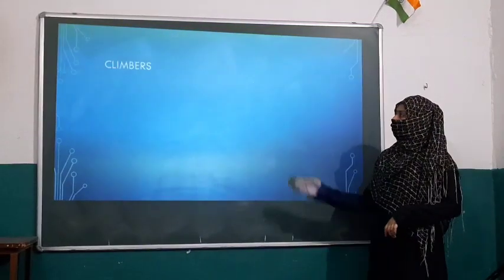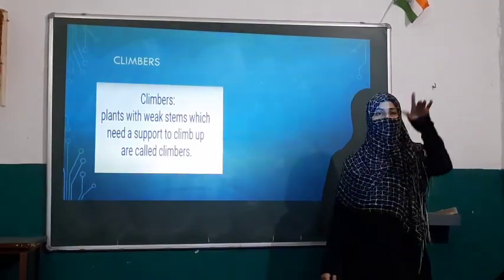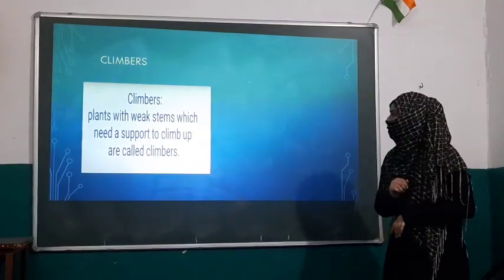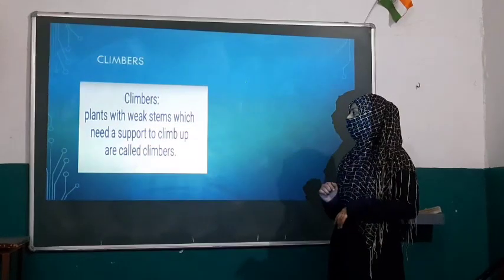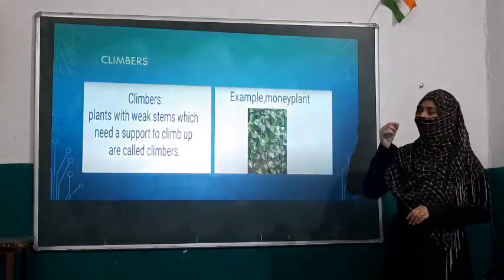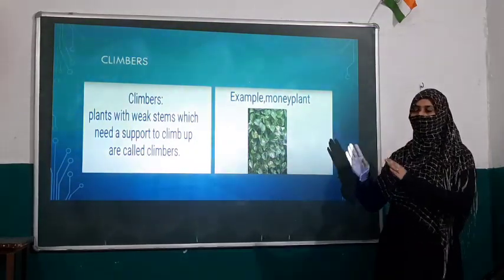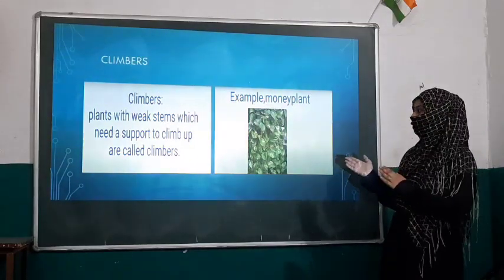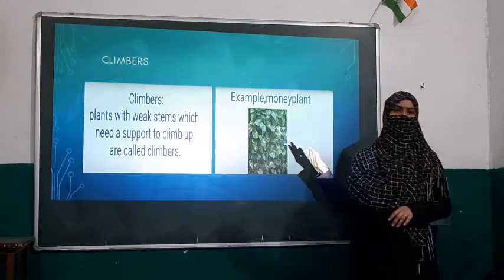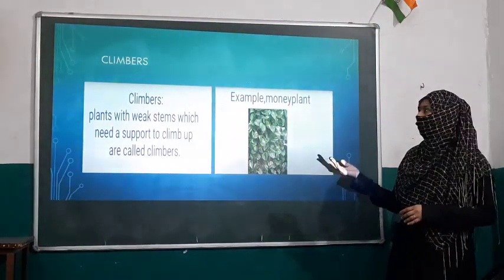The fifth category is climbers. The word climbers comes from the word 'climb.' Plants with weak stems which need a support to climb up are called climbers. Their stems are too weak — they cannot stand straight and need support, like a wall, to grow along. Examples are money plant, which many people grow in their houses with tendrils growing upward, grapevine, and pea plant — all are examples of climbers.